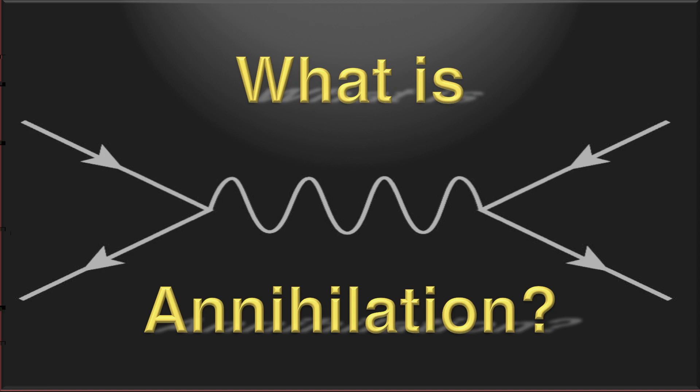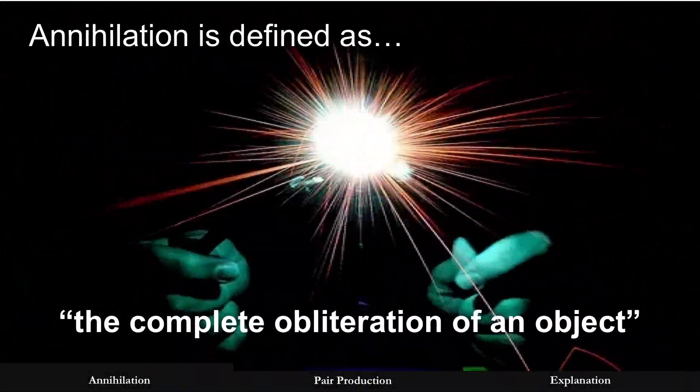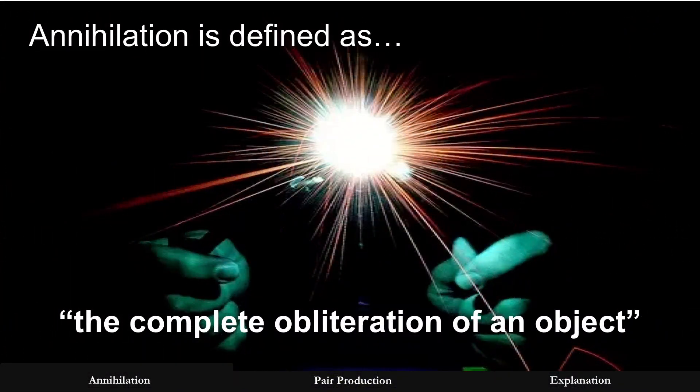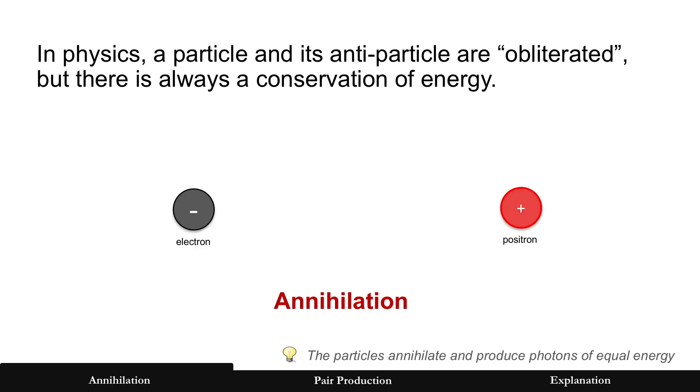What is annihilation? Well, annihilation can be defined as the complete obliteration of an object. But just to be clear, in physics, while it might be true a particle and its antiparticle are obliterated, there's always a conservation of energy.